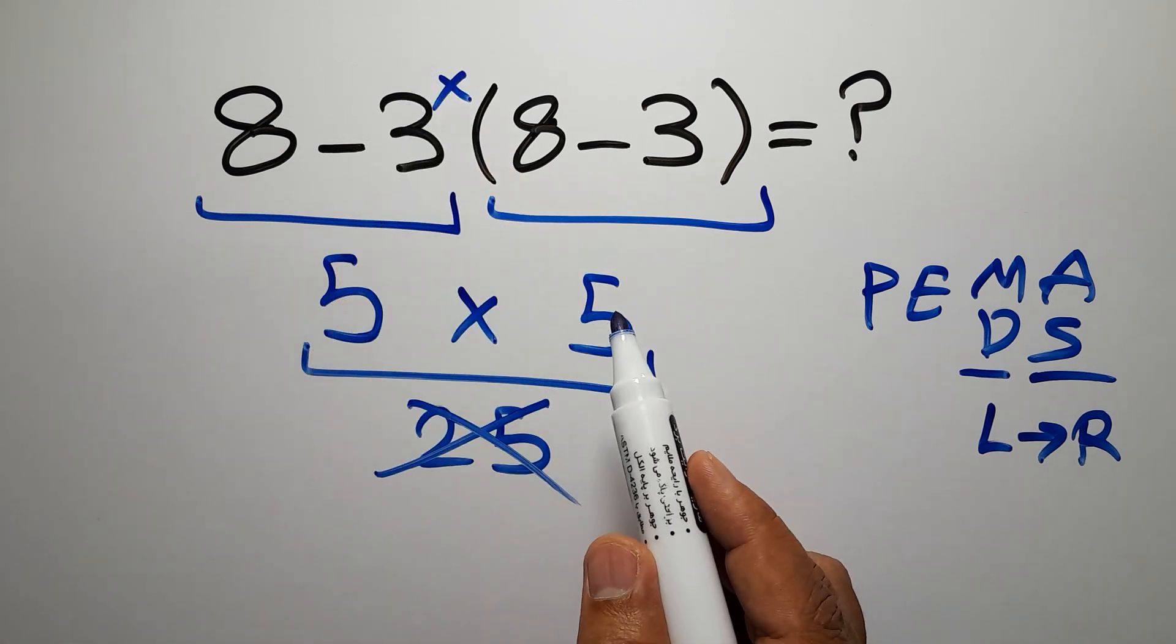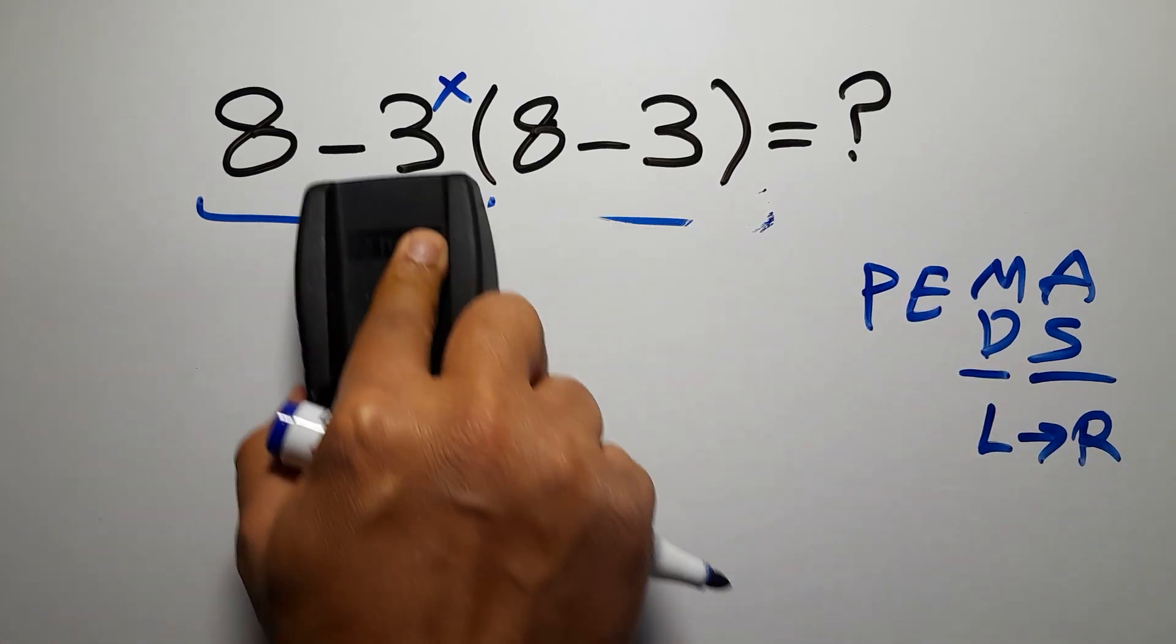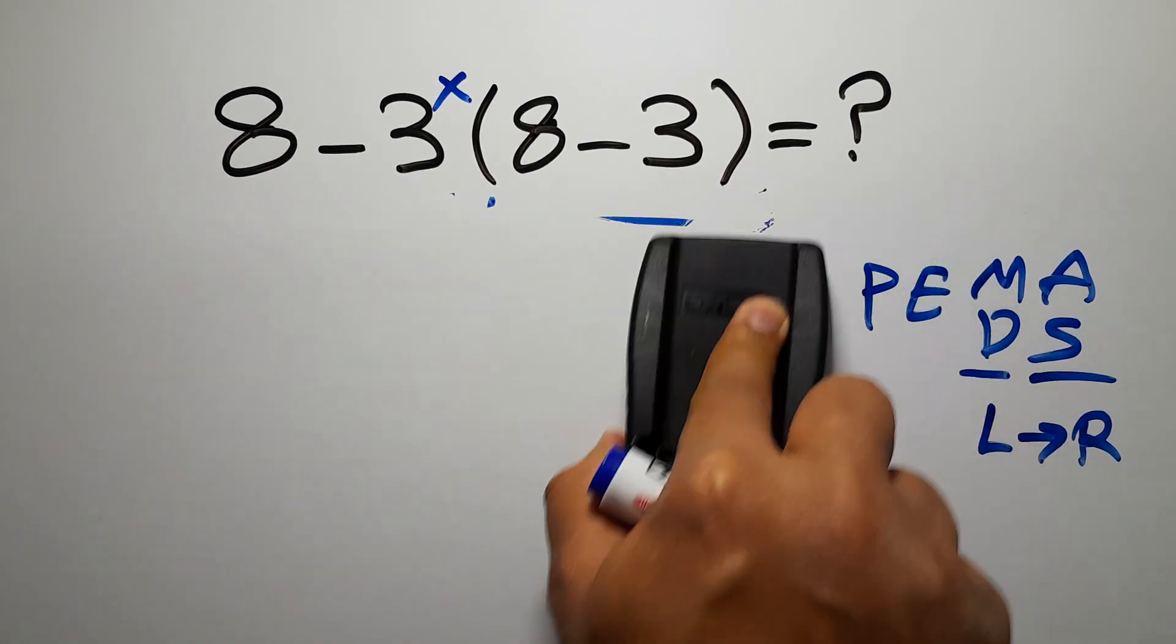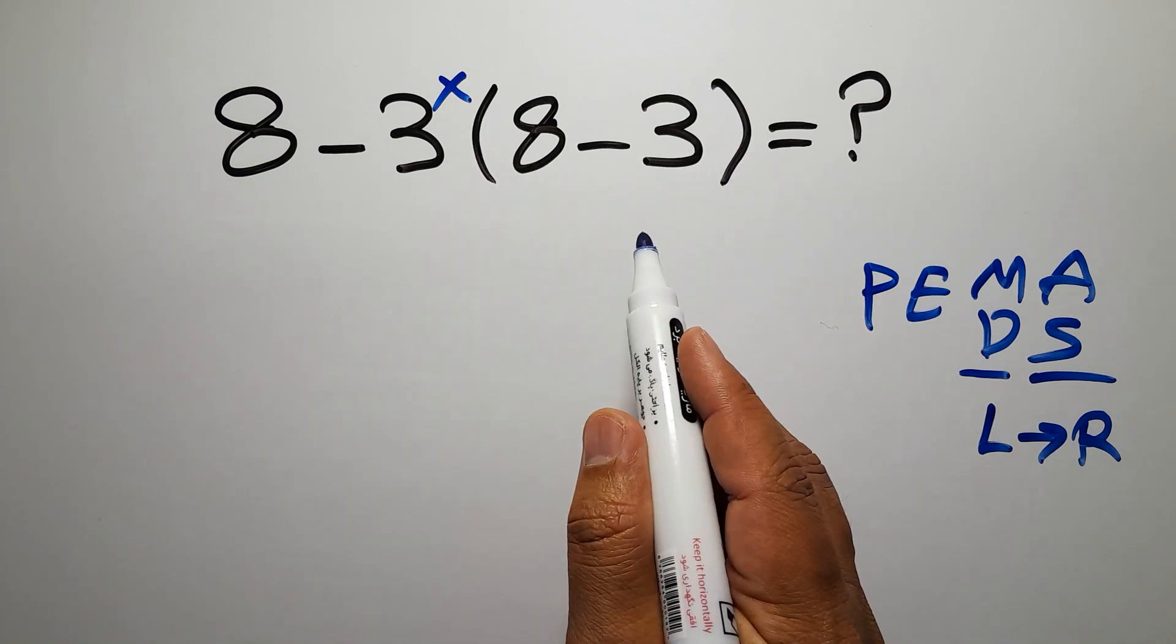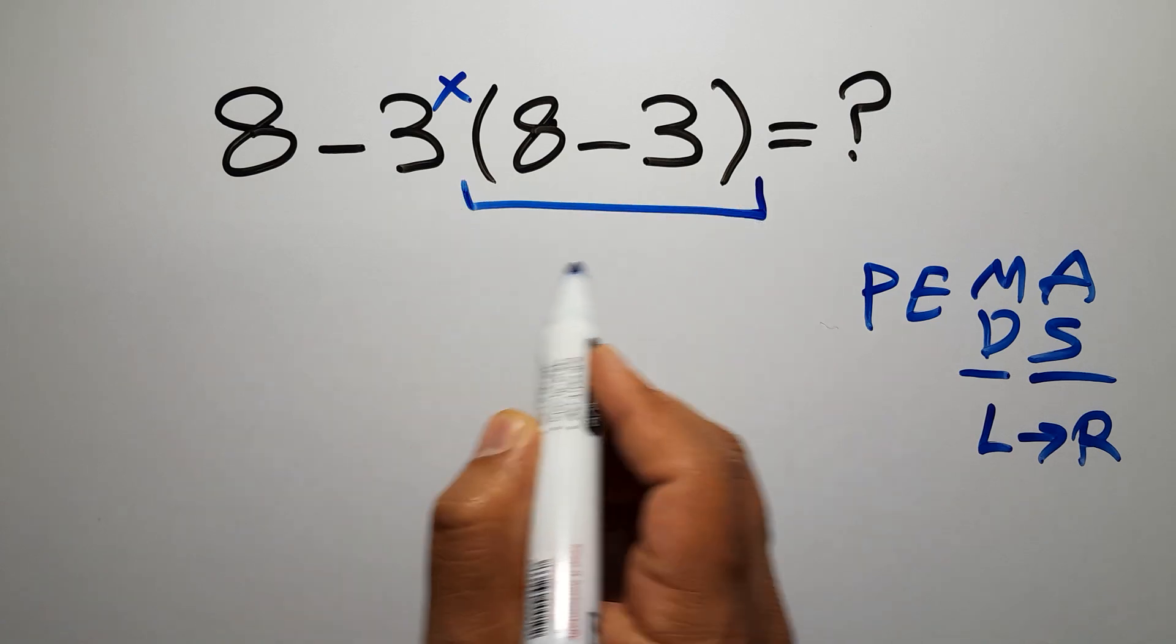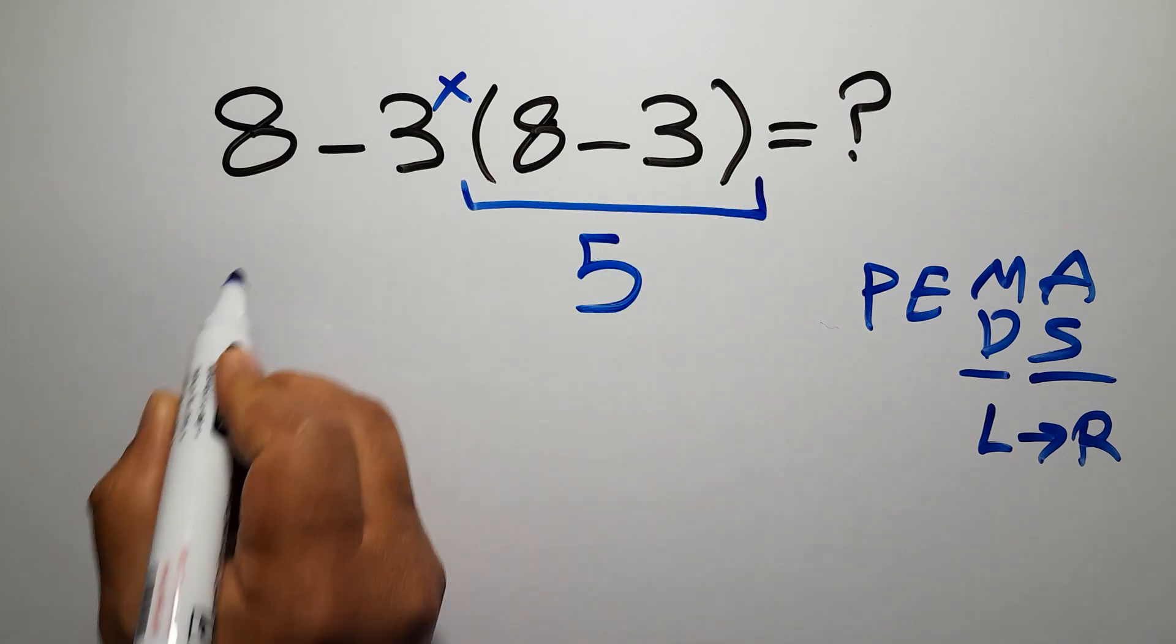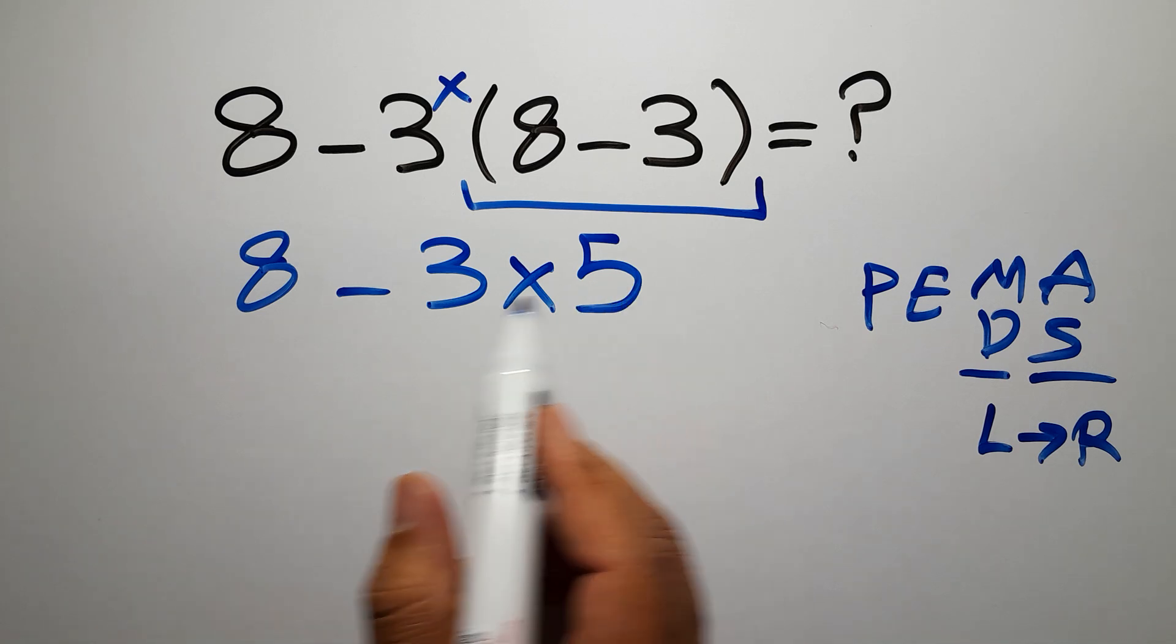So according to PEMDAS, first we have to do the parentheses. Inside these parentheses we have eight minus three which equals five, so now we have eight minus three times five. Now we have one subtraction and one multiplication.